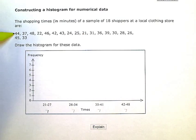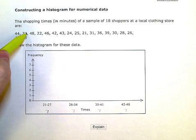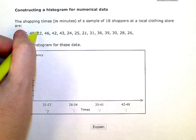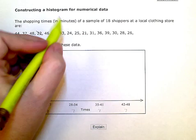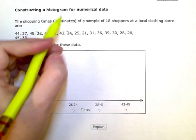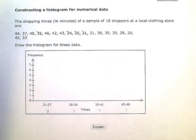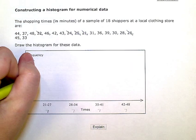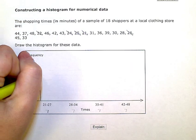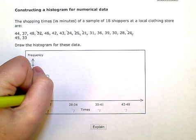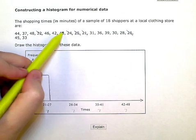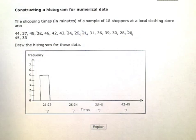So between 21 and 27, if I look through my data here, I have one, two, three, four, five, five numbers. So I'm going to draw a bar up to five. And let me just double check, those are all between 21 and 27.